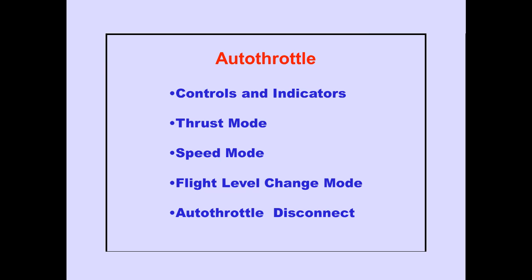In this part, we discuss the autothrottle controls and indicators, the thrust, speed and flight level change modes, and autothrottle disconnect.